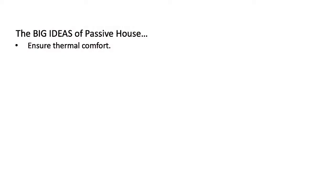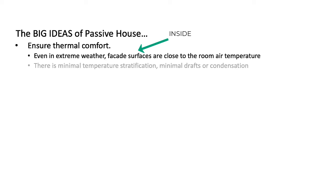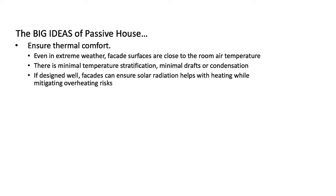The next big idea in passive house is ensuring good thermal comfort. Even in extreme weather, facade surfaces should be close to the room air temperature. In a passive house building, there is minimum temperature stratification, minimum drafts, and minimum condensation. If well designed, facades can ensure solar radiation helps with heating while mitigating overheating risks.